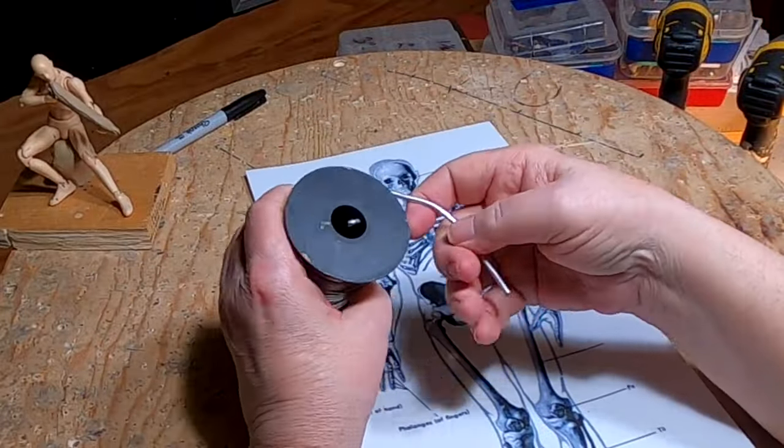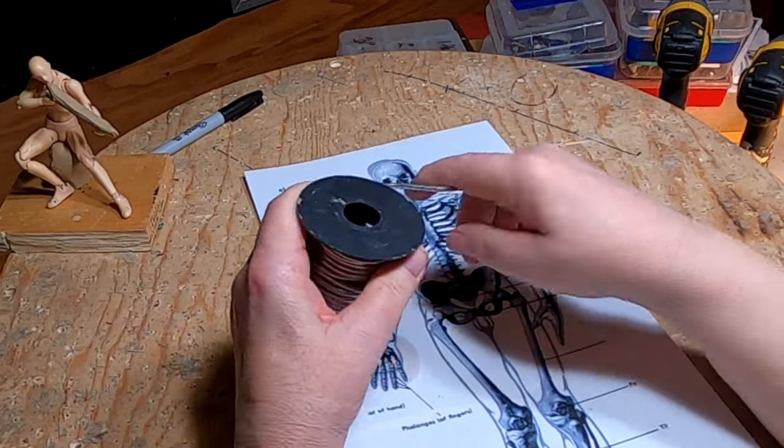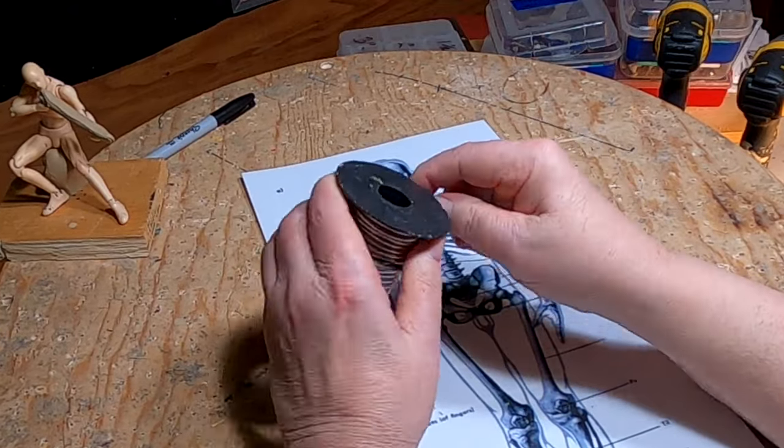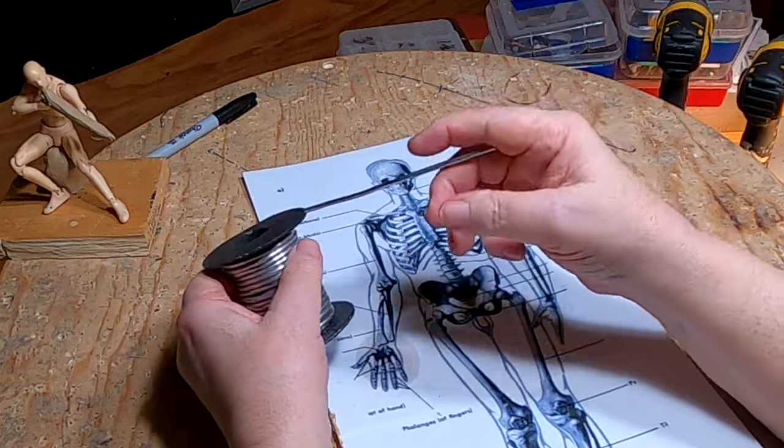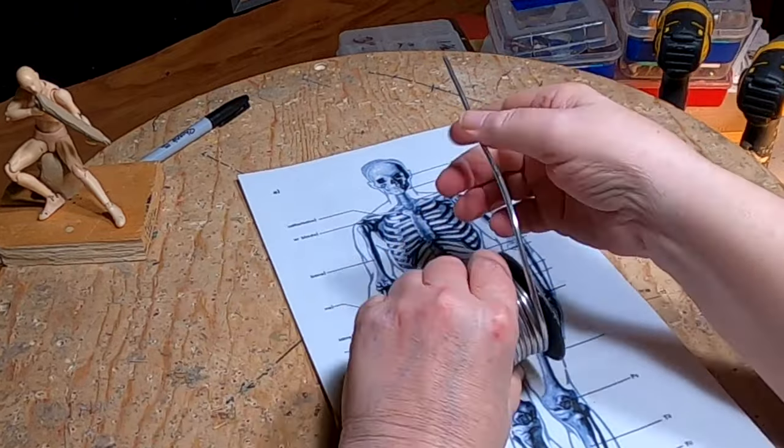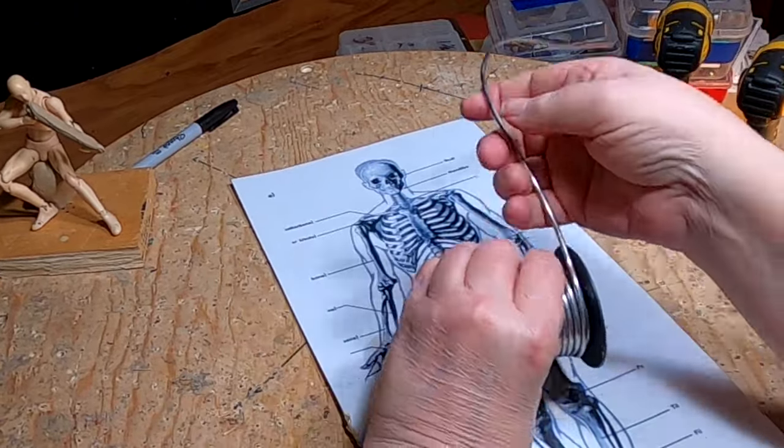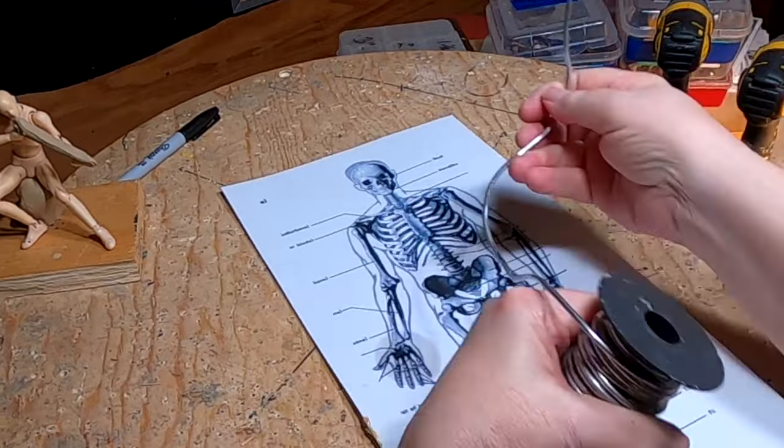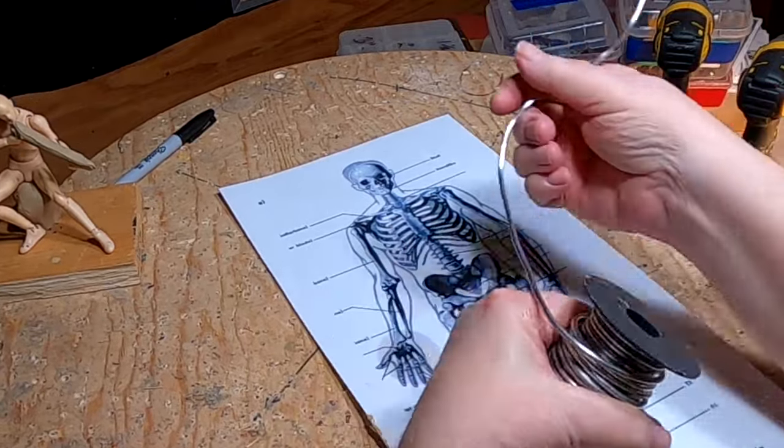The wire that I used for making an armature for this size, a standing figure would probably be one of a little thicker wire, but since it's going to be sitting down, it'd be a lot easier to make it out of this wire. This is aluminum wire that I got off of Amazon.